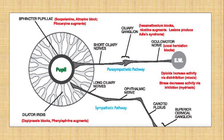As mentioned, we have two types of innervation of the pupil: the parasympathetic and sympathetic pathways. The parasympathetic pathway constricts the pupil, and the sympathetic pathway dilates the pupil.